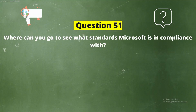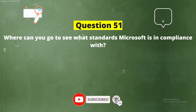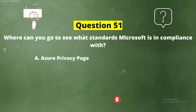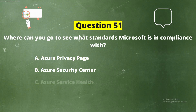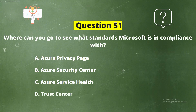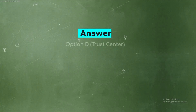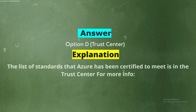Question 51: Where can you go to see what standards Microsoft is in compliance with? Options: Option A, Azure Privacy Page; Option B, Azure Security Center; Option C, Azure Service Health; Option D, Trust Center. The correct answer is Option D, Trust Center. Explanation: The list of standards that Azure has been certified to meet is in the Trust Center.